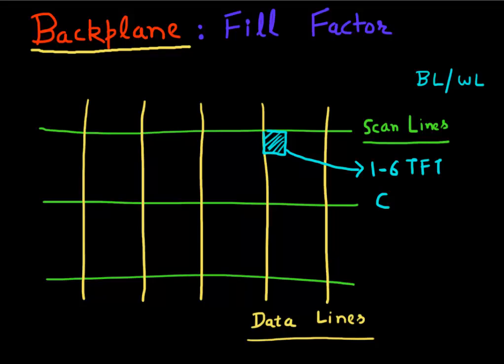What they do is they take the input from these data line and scan line. What they generate as output is either the voltage or the current. That voltage or current is applied from this control circuitry to either the liquid crystal or the OLED which is placed over here.